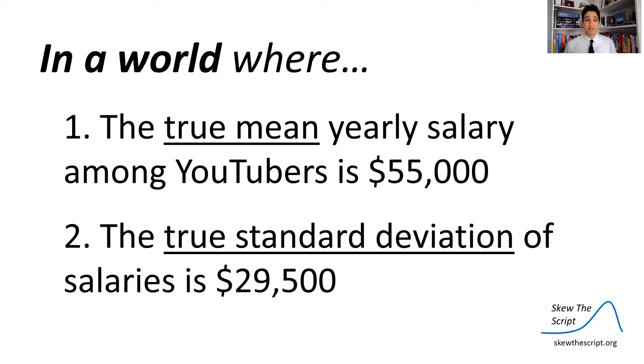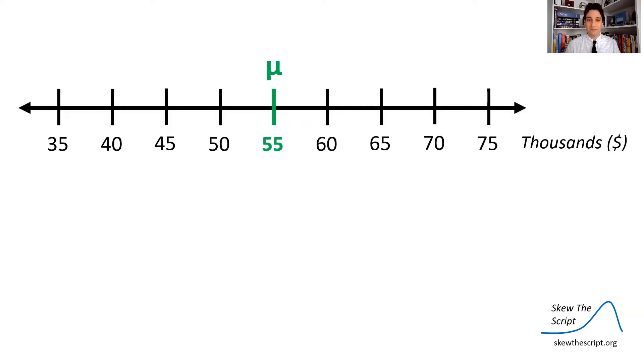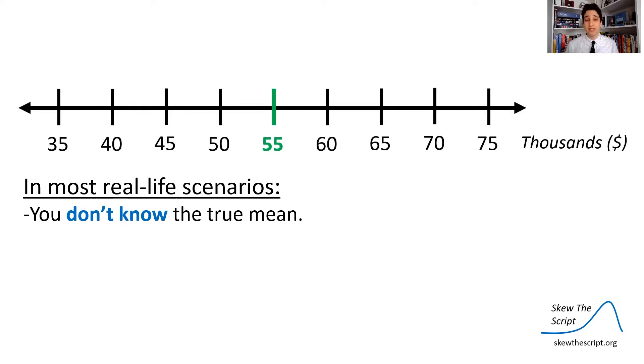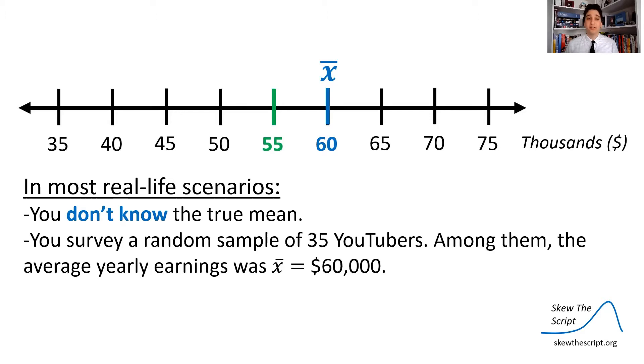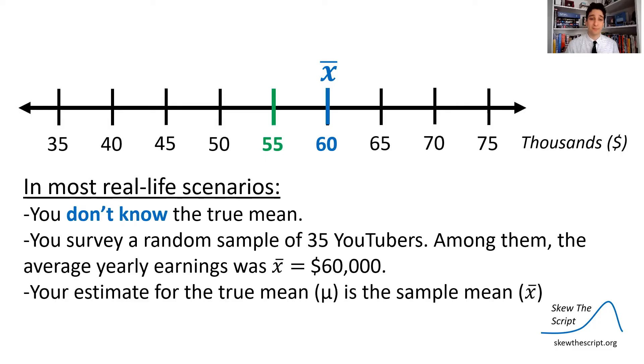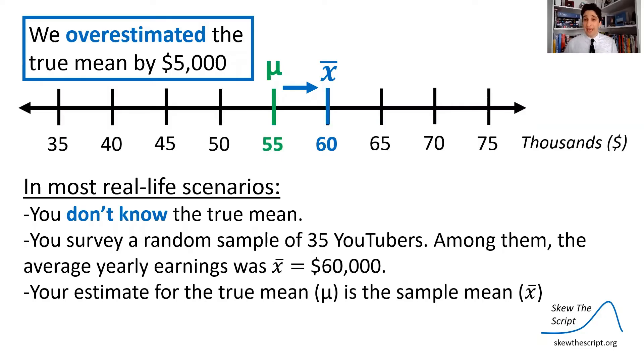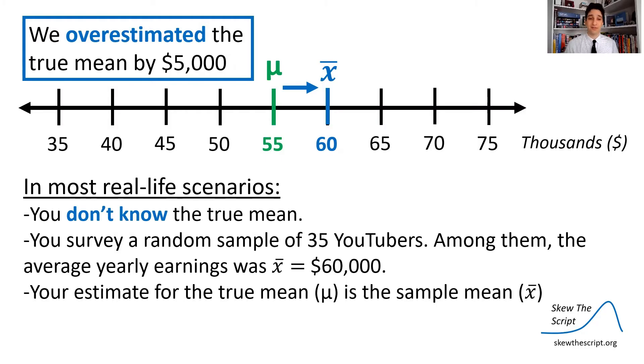So let's set up a sampling distribution in a world where let's assume the true mean salary among YouTubers is $55,000. And the true standard deviation of those salaries is $29,500. So we're going to do in a world where these assumptions are at play. We're centered at $55,000. But in most real life scenarios, you don't know the true mean. So you survey a random sample of 35 YouTubers and among them say that the yearly average earnings was $60,000 among your sample. So you're going to use that $60,000 as an estimate for the true mean, which we don't know, but it's actually $55,000 just assuming that. So if that were the case, we'd be overestimating the true mean by $5,000. So we can take this thought example and think about when I estimate something that I don't truly know, how far off will I usually be?